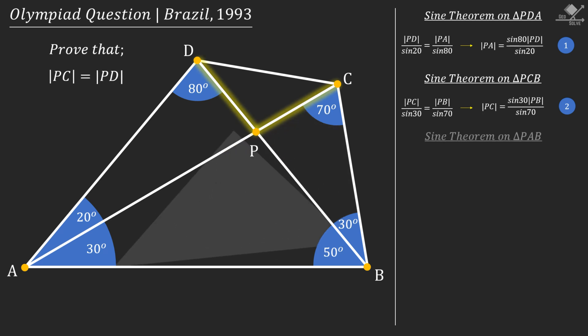Finally, apply sine theorem on triangle PAB. From this triangle, we can write PB over sine 30 equals PA over sine 50. So we will have our third equation.